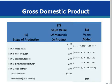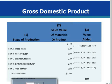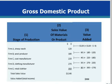This table illustrates the value added in a five-stage production process. The value added is calculated as the difference between the sales value of the materials and the value of the good at the previous production stage. Using this method will avoid multiple counting.